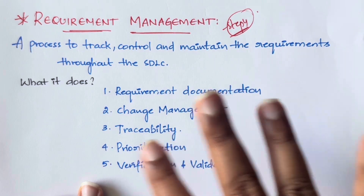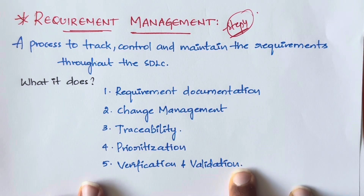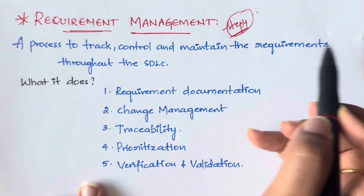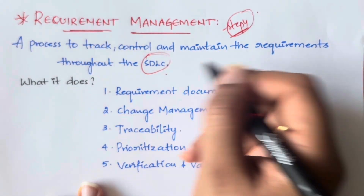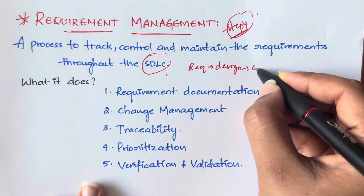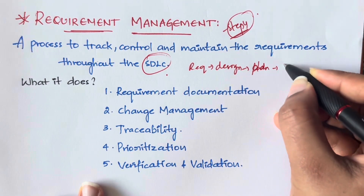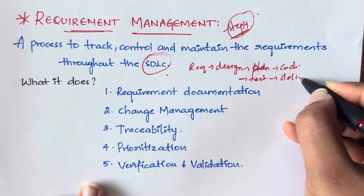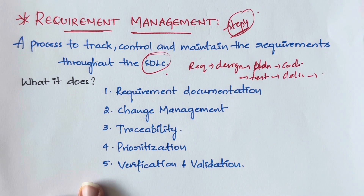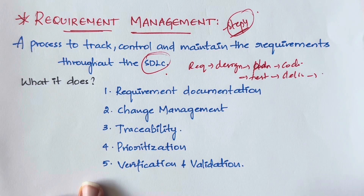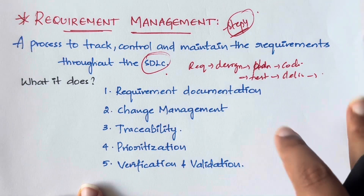So what is requirement management? It is a process where you track, control, and maintain the requirements throughout the SDLC — the Software Development Life Cycle. In the SDLC, first you gather requirements, then you do the planning, then the coding, then the testing, then you deliver it, and then you maintain it. Throughout this entire life cycle, requirement management ensures all requirements are implemented properly and everything is going as planned.